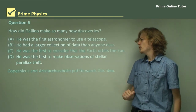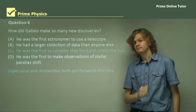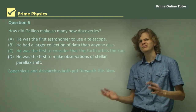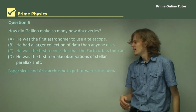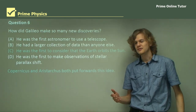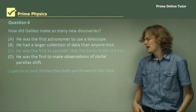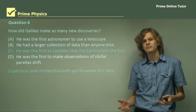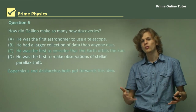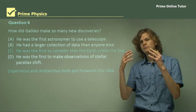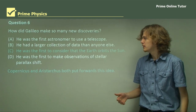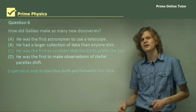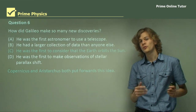Option C: he was the first to consider that the Earth orbits the Sun. That's not really right either. Copernicus and Aristarchus — Aristarchus over a thousand years earlier — had also put forward the idea that the Earth orbited the Sun. They often weren't taken seriously or people found flaws they couldn't explain. So Galileo wasn't the first to consider it, but he provided the best proof for it at the time.